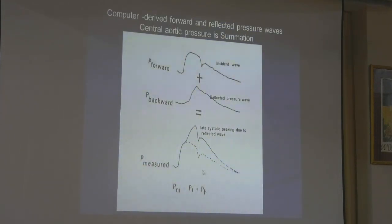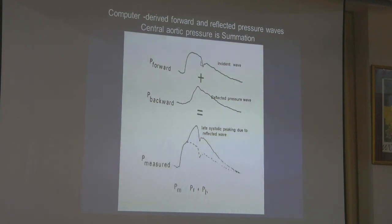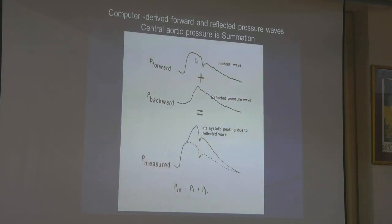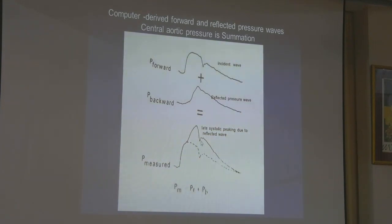The central aortic pressure as measured in the cath lab is a summation of both the forward pressure wave and the reflected pressure waves from the branch points of the vascular tree. The main point from where reflected waves come in the central aorta is the bifurcation of the terminal aorta into the iliac arteries. The reflected waves summate with the forward pressure wave, and that is what you record in the cath lab as the central aortic waveform. You can see the late systolic peaking occurring, and then the dicrotic notch — this peaking occurs mainly because of the addition of the reflected wave to the forward wave.